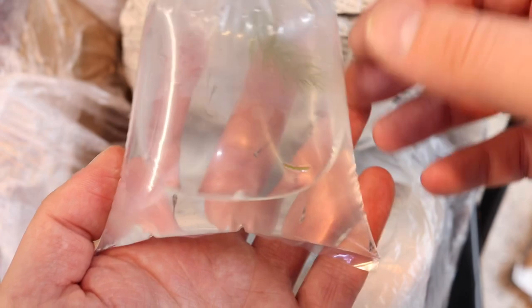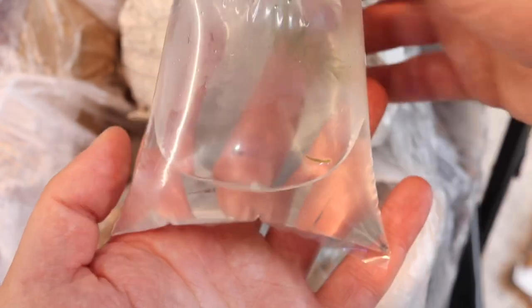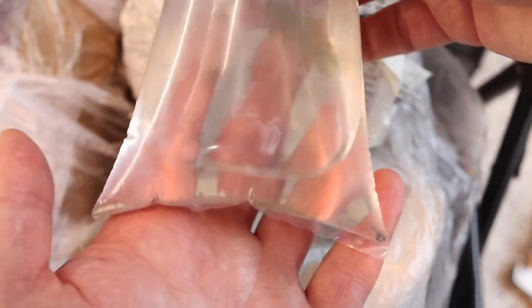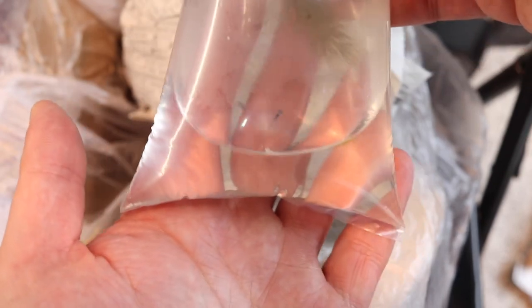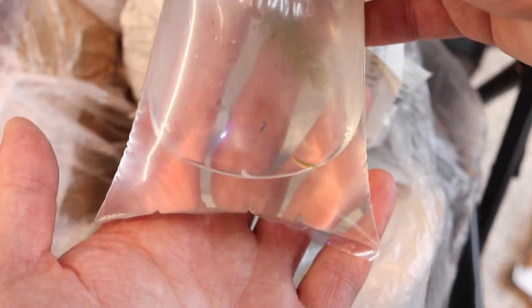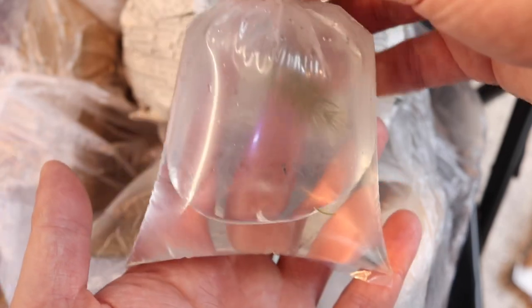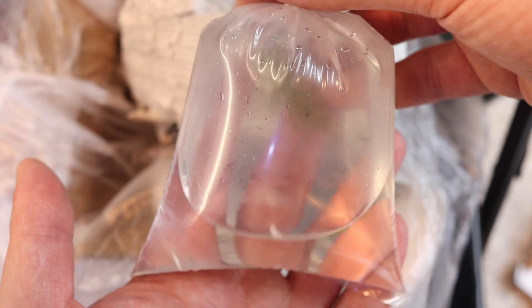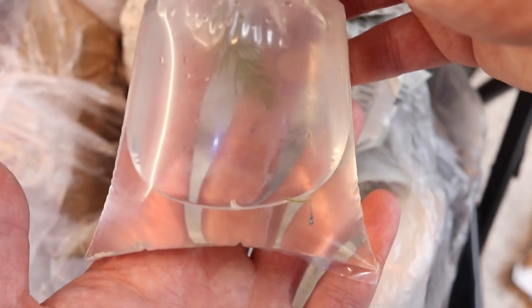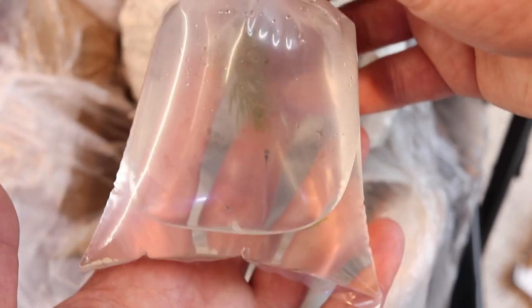How many do we got here? One, two, three, four, five, six, seven. Awesome! Looks like he shipped me an extra fish, which is always a pleasant surprise. I always appreciate that from sellers that do that for me. Seven little itty bitty rice fish. I wonder if they're going to get swallowed up in the tank.